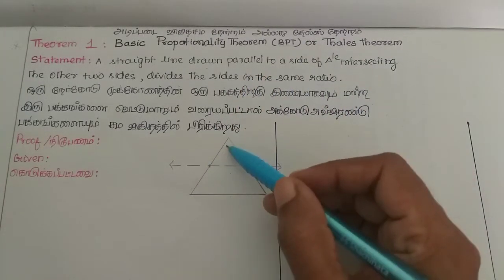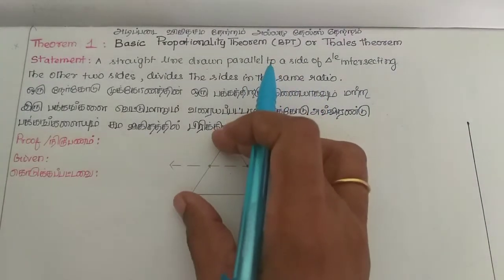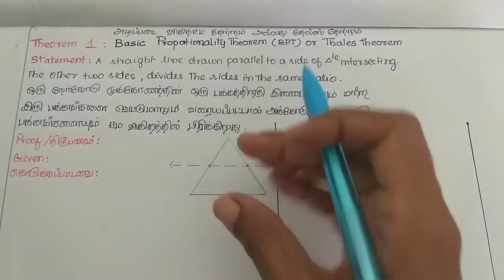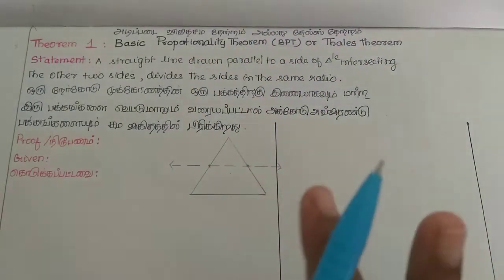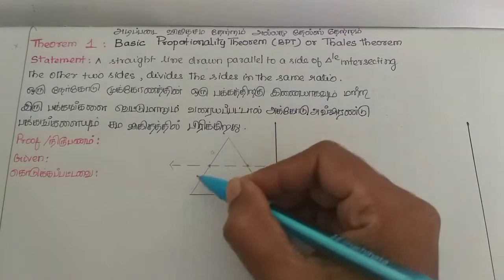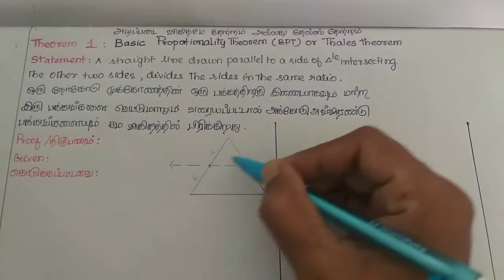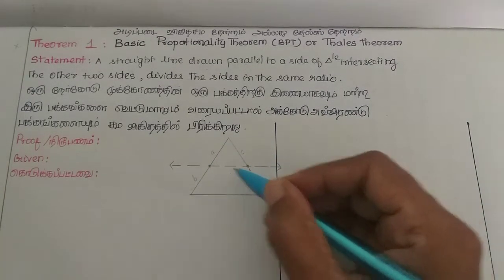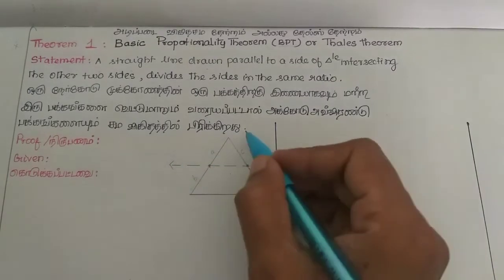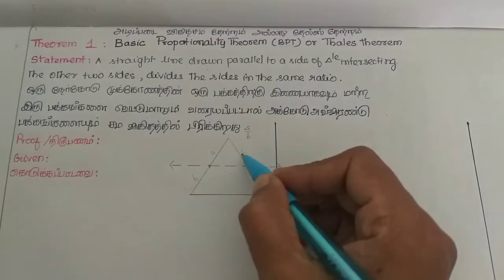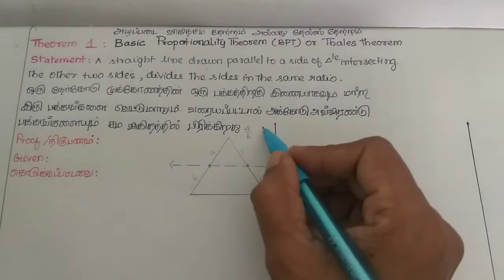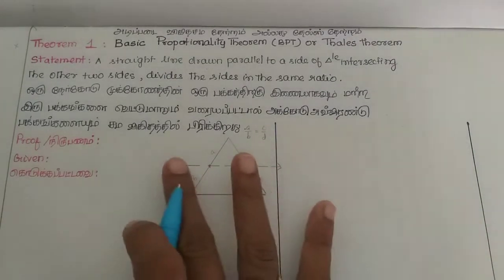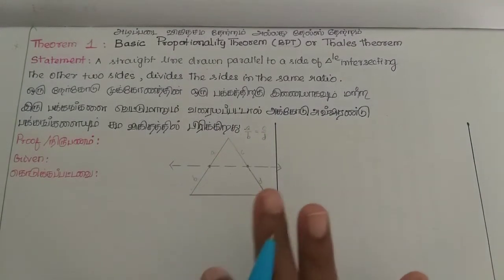The parallel line divides the sides in the same ratio. For example, if one segment is a and the other is b, and the corresponding segments on the other side are c and d, then a/b equals c/d — the same ratio on both sides.